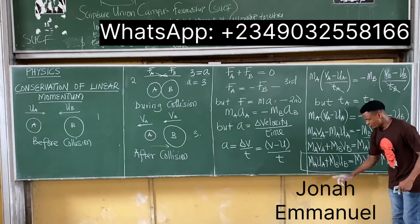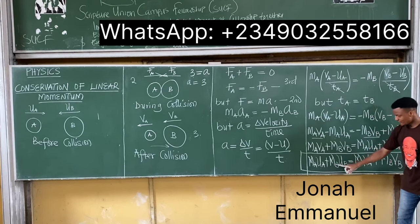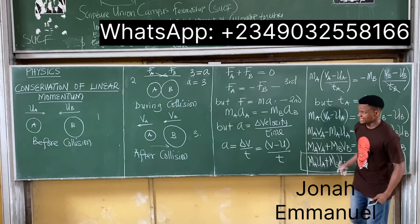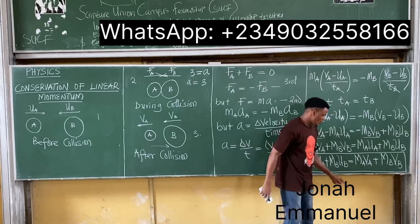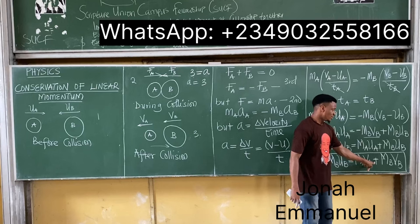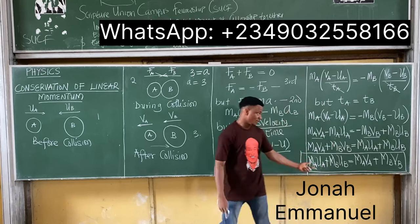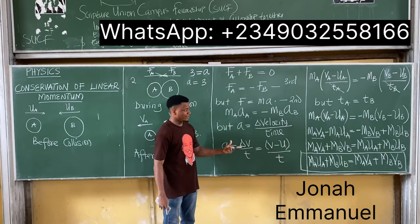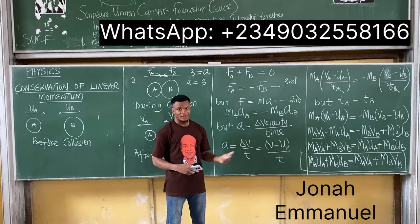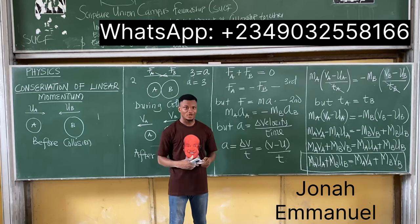So the law of conservation of linear momentum in mathematical form states: m_a·u_a + m_b·u_b = m_a·v_a + m_b·v_b. Now let's take some problems on this to see how we can solve questions on the law of conservation of linear momentum.